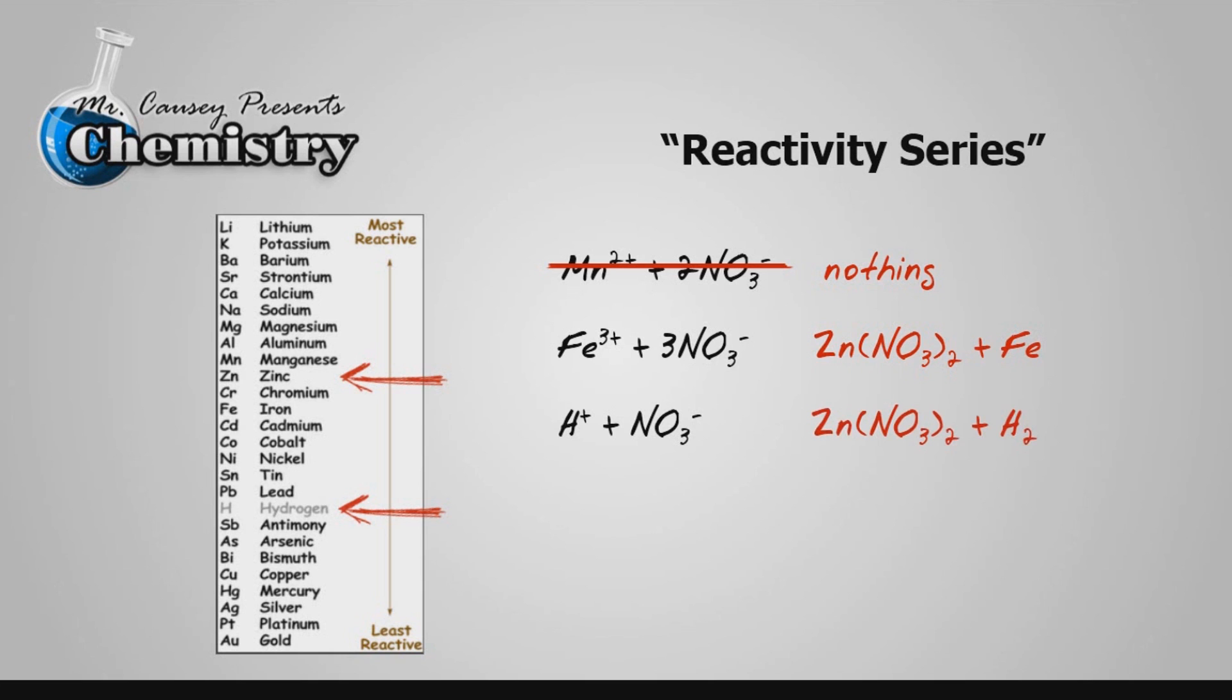And now let's look at hydrogen. Hydrogen is lower than zinc, therefore it's going to react. We're going to get zinc nitrate and hydrogen gas. So we do see that in the first one nothing's going to happen, but in the other two we're going to get a separation of the iron and the hydrogen. They're going to come out of solution and the zinc is going to take their place. It's basically a single replacement reaction.